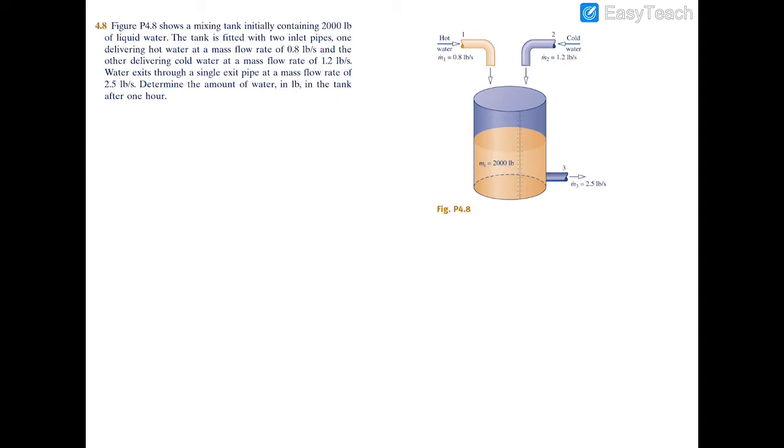We're going to start off with the initial mass that's inside of the tank, so 2000 pounds. So m initial is 2000 pounds. And then the inlet from the hot water, so we'll call that m_h.